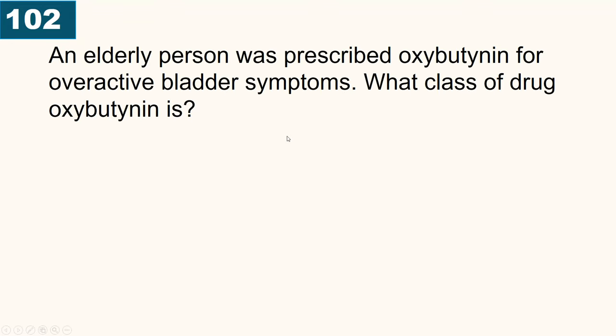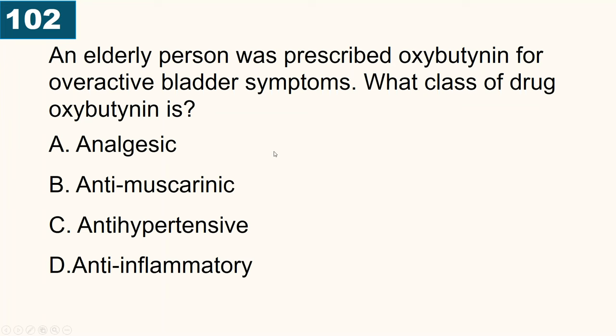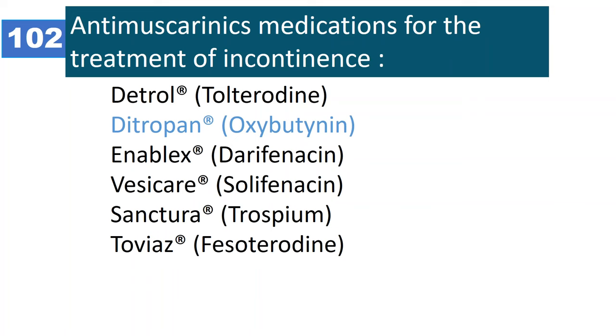An elderly person was prescribed oxybutynin for overactive bladder symptoms. What class of drug is oxybutynin? A best strategy for multiple choice questions: don't look at the answers first — read and understand the question, then guess the answer in your mind. Oxybutynin is an anti-muscarinic or anticholinergic drug. Other anti-muscarinic medications used for incontinence include tolterodine, oxybutynin, darifenacin, and solifenacin.